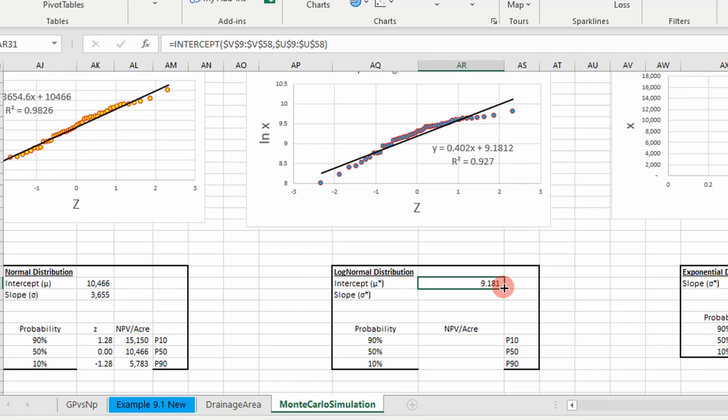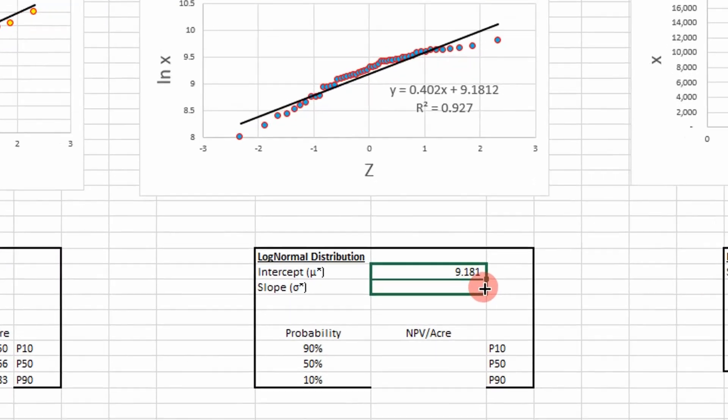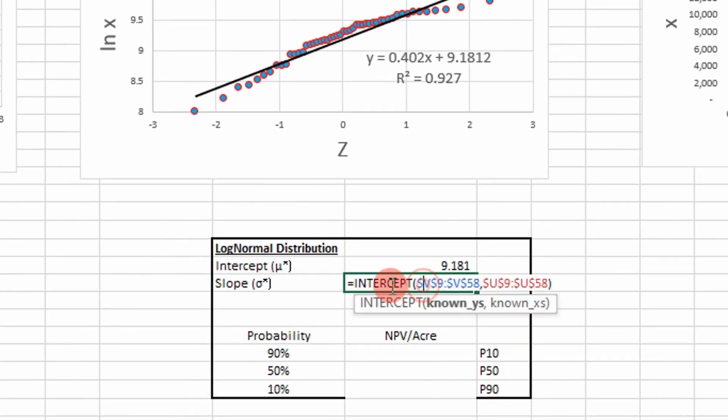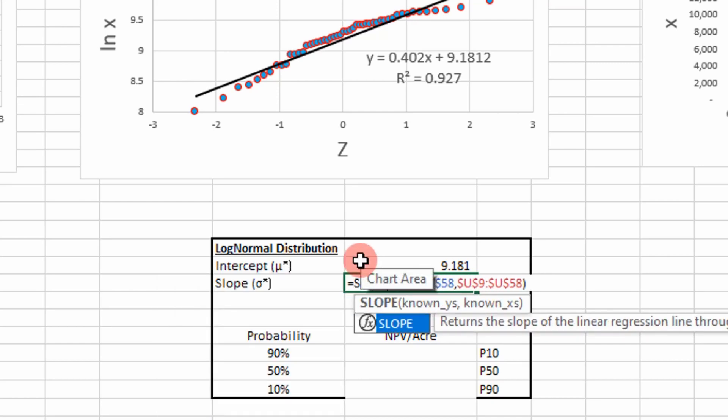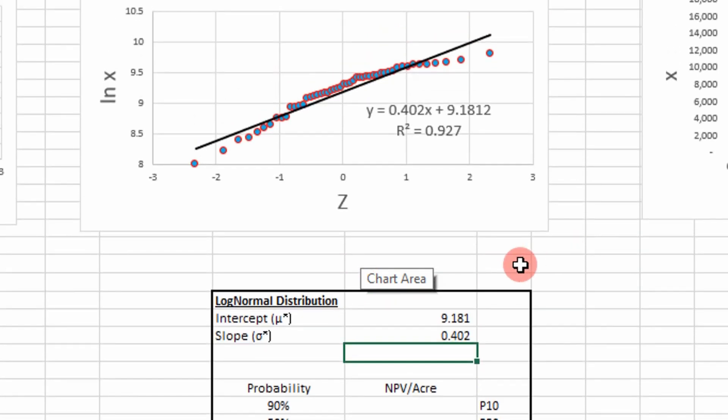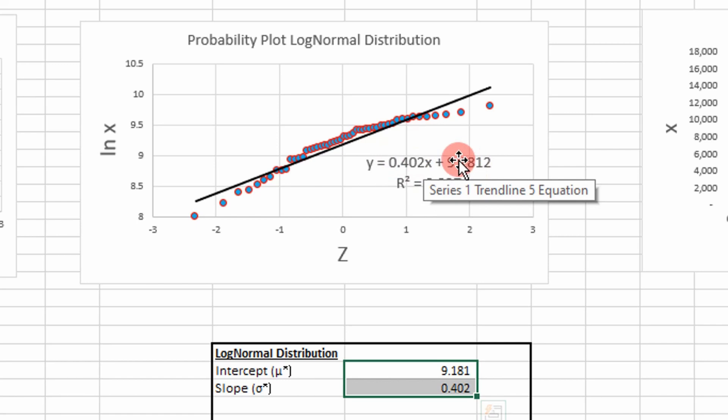And then I'm just going to run this down and change this to the slope to get our standard deviation. You can see here these values agree with our linear regression values, so we know we did it right.